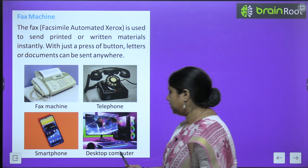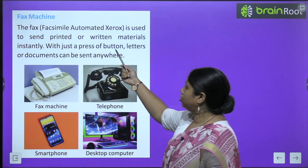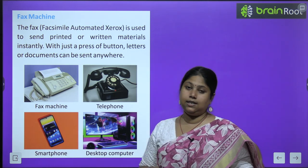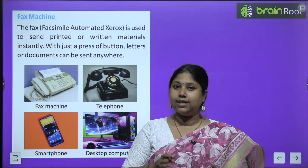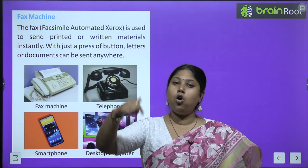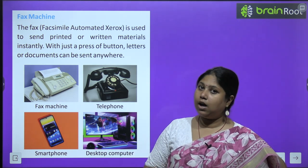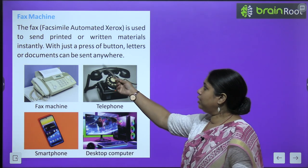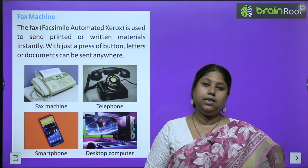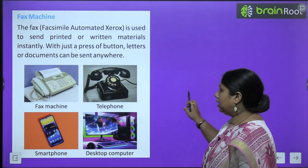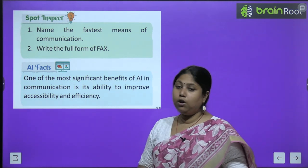Fax machine — this is a fax machine, this is a telephone, this is a smartphone, this is a desktop computer — yeh sab modern means of communication hain. A fax machine — that is facsimile automated xerox — is used to send printed or written materials instantly. Yeh zyaatar offices mein use hota hai. Jab bhi humein koi direct message bhejna hota hai toh hum fax ke through karte hain. With just a press of a button, letters and documents can be sent anywhere. Can you name the fastest means of communication? That is telephone. What is the full form of fax? Facsimile automated xerox.